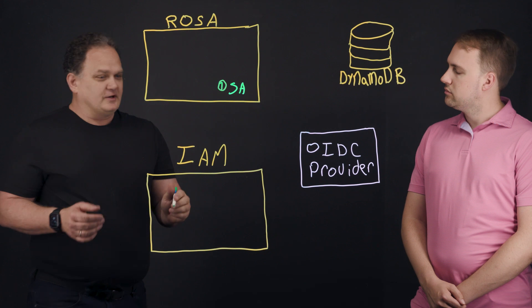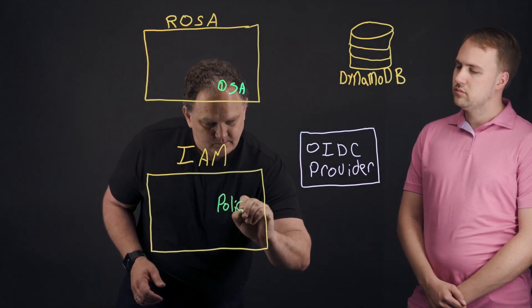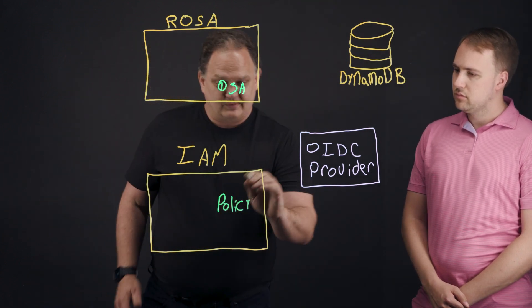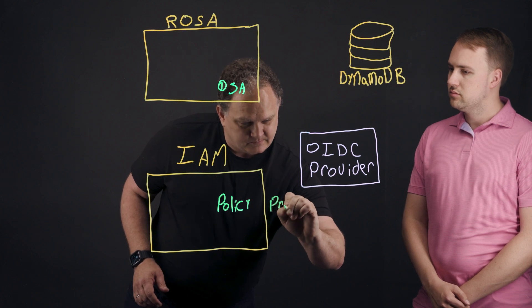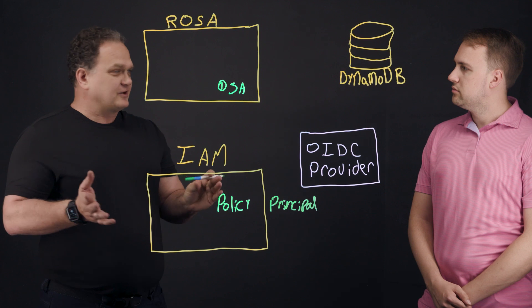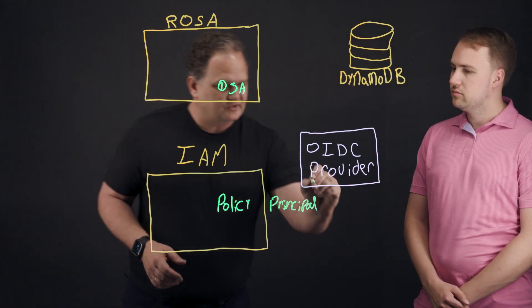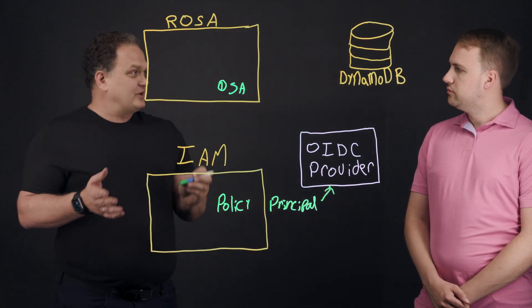Then we need to set up a couple of things in IAM. First thing we're going to do is create a policy, an IAM policy in AWS. And the policy contains several things. One is a principal. And the principal says who can do which action. The person that's going to take the action on our behalf is this OIDC provider.